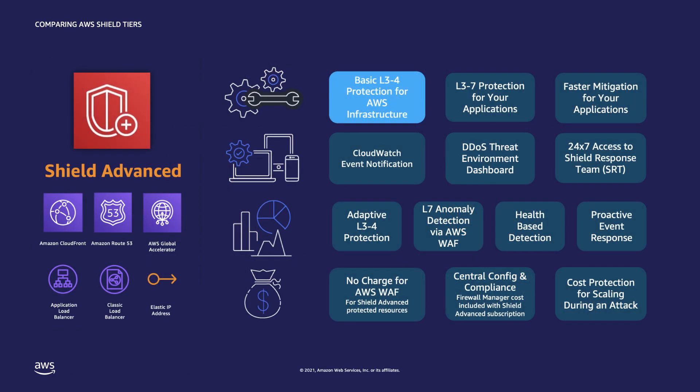Let me talk about specific benefits that AWS Shield Advanced can bring to you. Shield Standard provides protection from layer 3 to layer 4 for most high-volume attacks targeting AWS infrastructure and managed services. When you subscribe your account to AWS Shield Advanced and add resources under protection, we start baselining your traffic. We understand the throughput capacity of the resources you put under protection, adjust the limits accordingly, and can provide mitigations against attacks targeting those resources much faster.